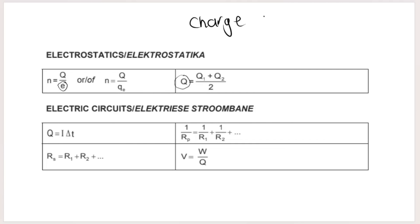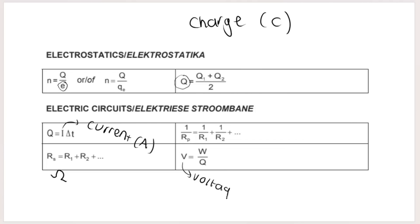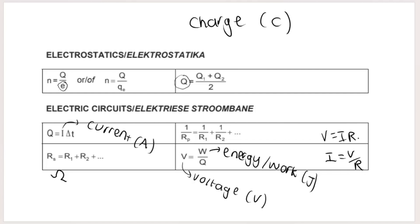Charge is measured in coulombs and you may need to convert to coulombs. For electricity: q is charge in coulombs, I is current in amperes, time in seconds, resistance in ohms. This formula works out effective resistance in parallel; another is for series. V is potential difference measured in volts, W is work or energy in joules. Note: the formula V = IR (Ohm's law) is missing from the sheet, so you need to know that one.